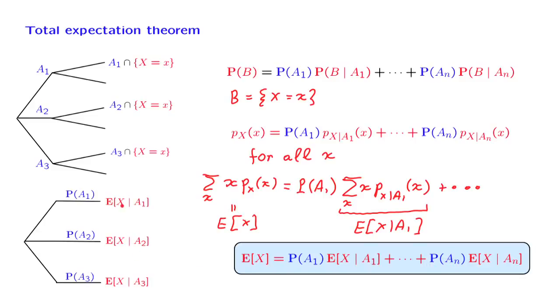The picture is like this. Under each scenario, the random variable x has a certain conditional expectation. We take all these into account. We weigh them according to their corresponding probabilities, and we add them up to find the expected value of x. So we can divide and conquer. We can replace a possibly complicated calculation of an expected value by, hopefully, simpler calculations under each one of the possible scenarios.